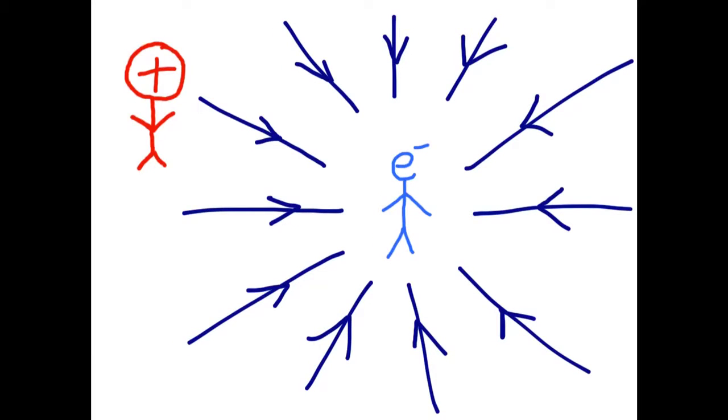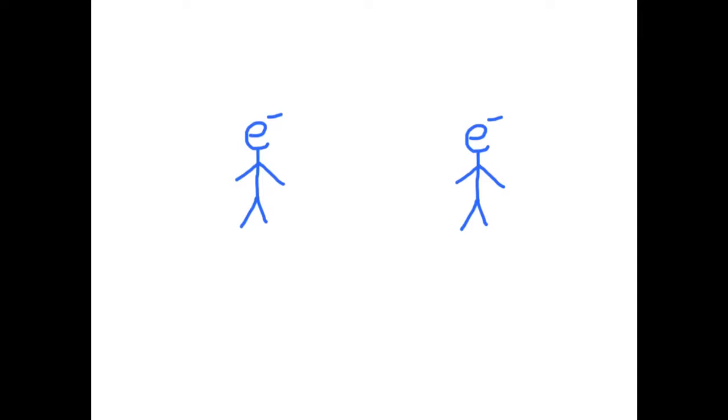If you place a positive charge in that field, likewise it's going to fall along those field lines. And if you have like charges, they're going to repel each other. So they would go the opposite direction of the electric field.